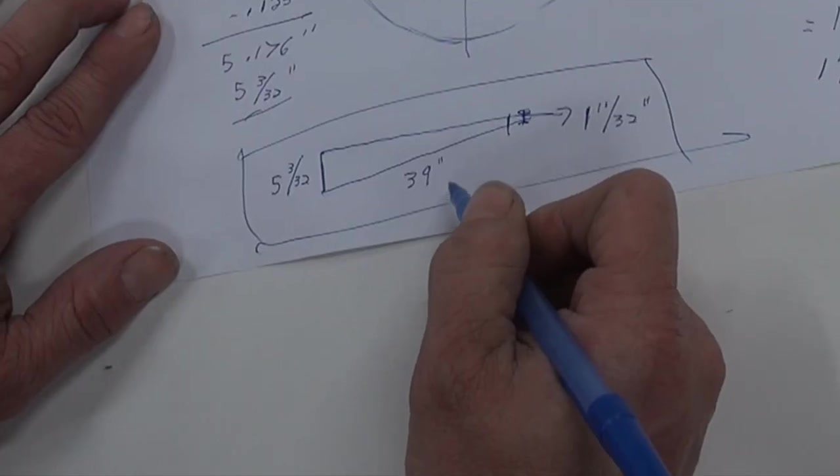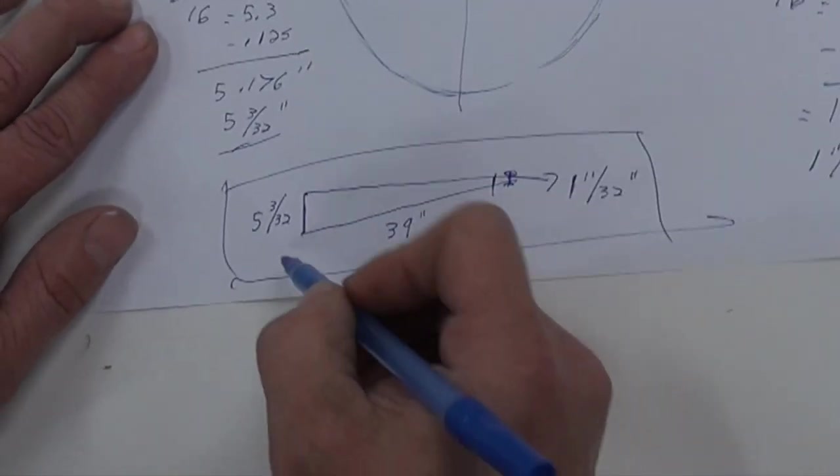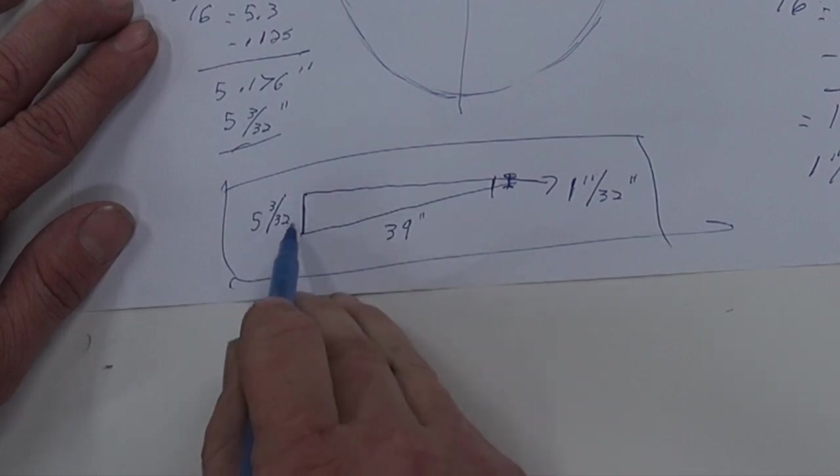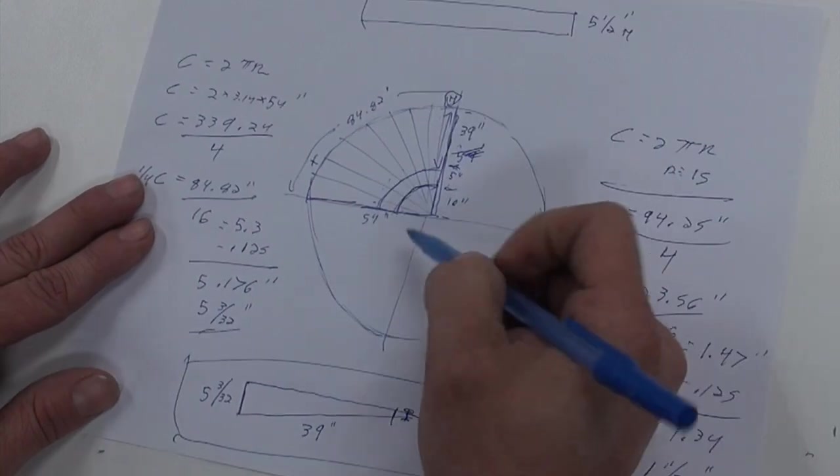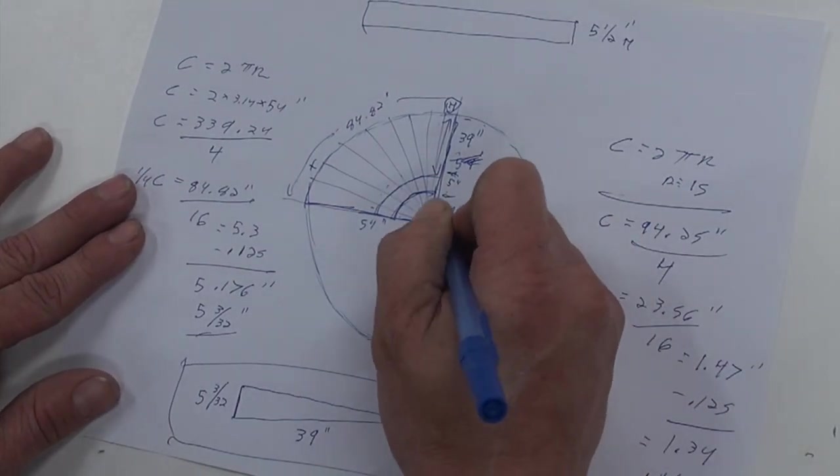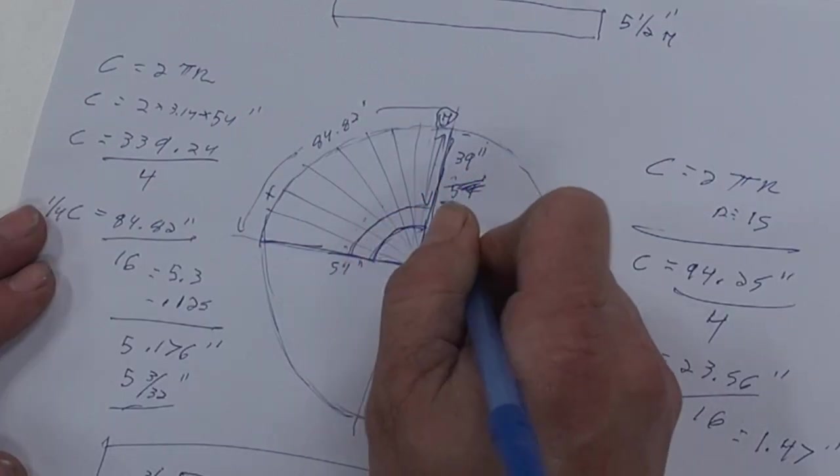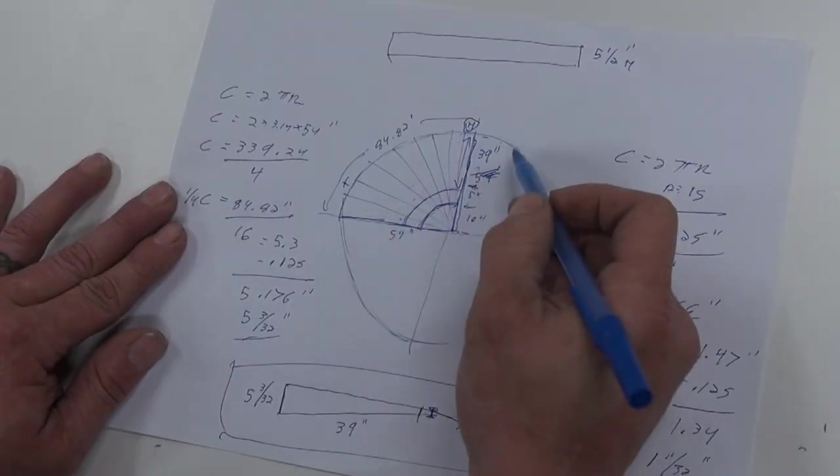That is our segment we need to cut. We need 16 pieces cut at this segment. 39 inches, 5 and 3 32nds on one end, 1 and 11 32nds on the other end. These pieces are pulled out with basic radius dimensions. So that's a 10 inch radius, and then this piece is a 15. We're going to pull out the reveals on the inside. That will give us the entire sunburst layout right there.